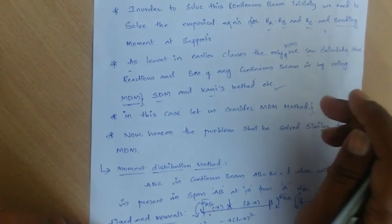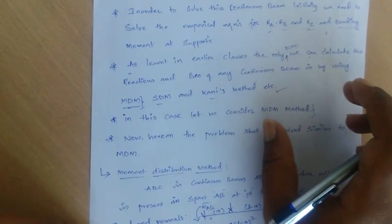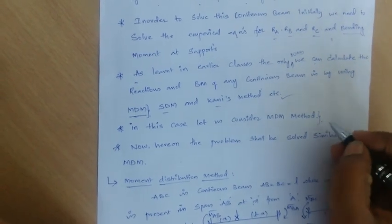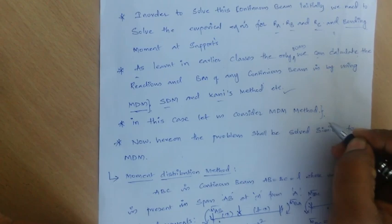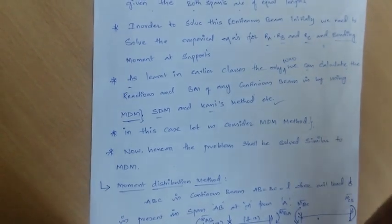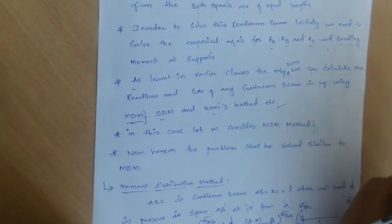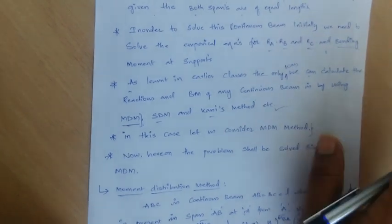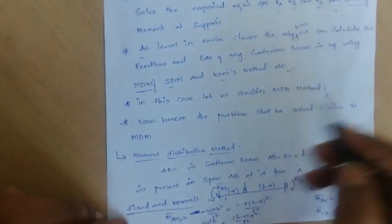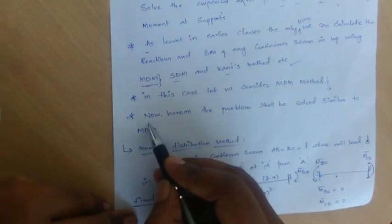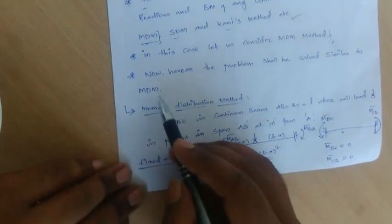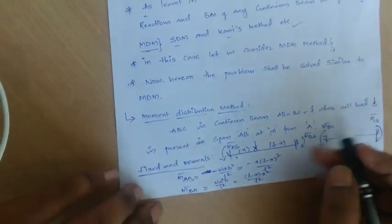Questions from these types of problems are typically asked as: solve the continuous beam and draw the influence line diagram. The examiner will not ask for all reactions R_A, R_B, R_C simultaneously — he will ask for any one of them. We will solve a similar problem using the MDM method.